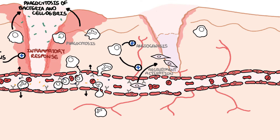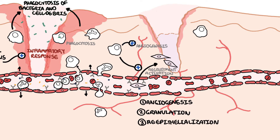The proliferative phase can be subdivided into three major processes: angiogenesis, granulation, and re-epithelialization. In angiogenesis, the endothelial cells proliferate extensively, forming new blood vessels. This process is promoted by cytokines and growth factors such as tumor necrosis factor alpha, transforming growth factor beta, and vascular endothelial growth factor. Angiogenesis is essential to successful wound healing.